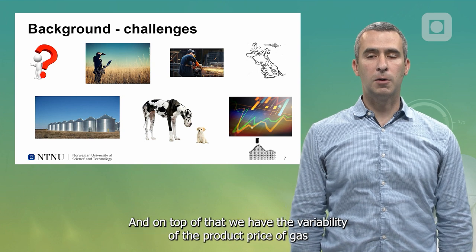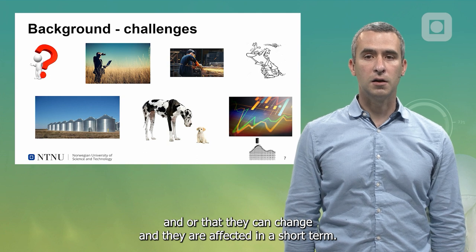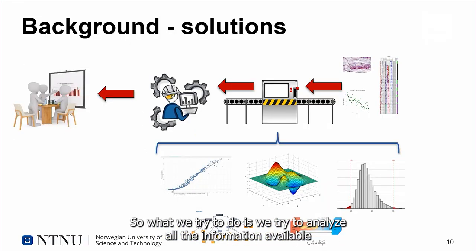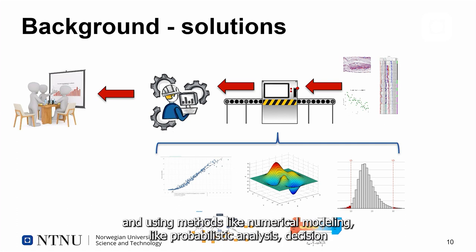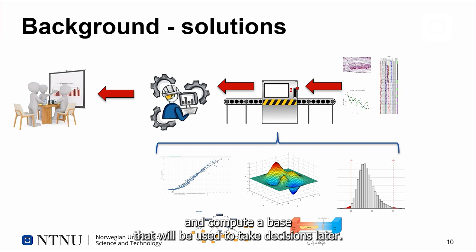On top of that, we have the variability of the product price of gas and oil that can change in the short term. What we try to do is analyze all the information available using methods like numerical modeling, probabilistic analysis, and decision making or using data points. We try to process all of that and compute a base that will be used to take decisions later.